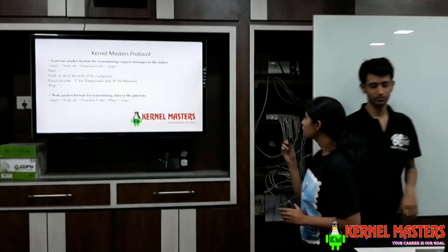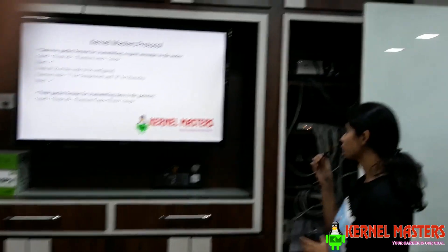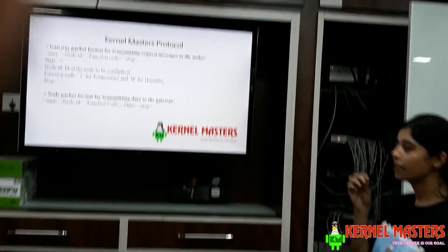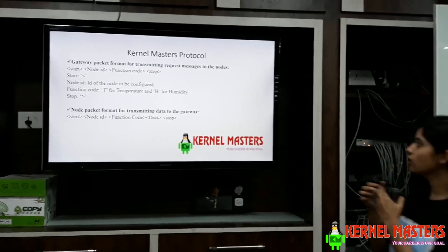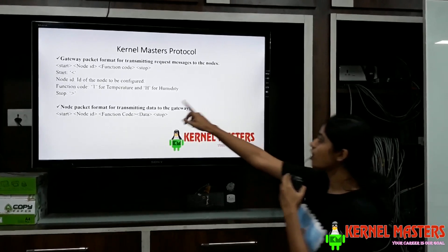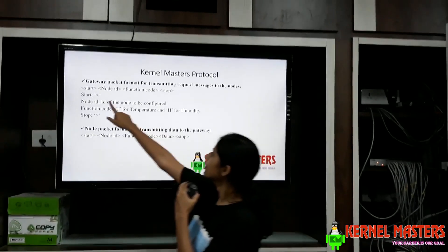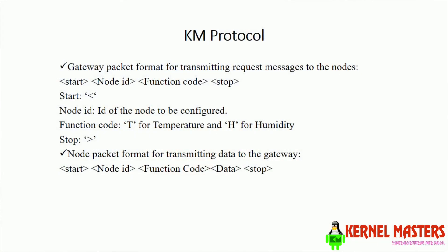Talking about the communication protocol, the gateway communicates with the node using the following packet format. First is the start signal, then the ID of the node to which it wants to send the request, then the function code — T for temperature and H for humidity — and finally the stop code.